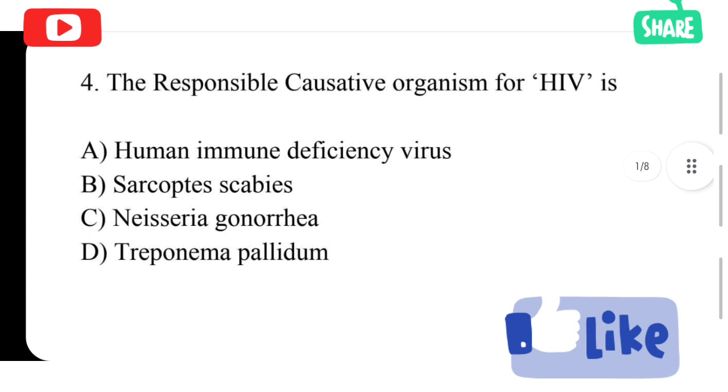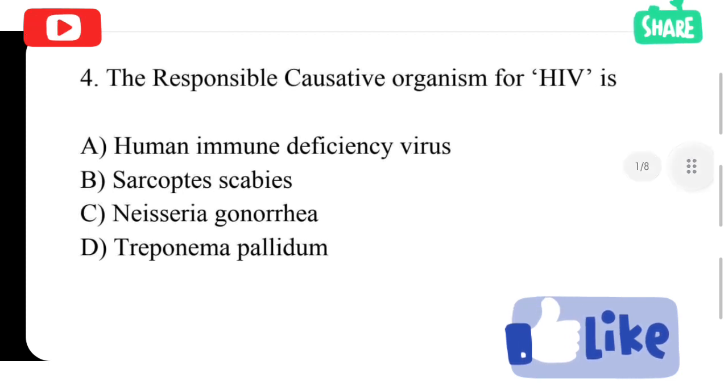The responsible causative organism for HIV is option A human immunodeficiency virus, option B sarcoptes scabies, option C neisseria gonorrhea, option D treponema pallidum. Option A is correct answer, human immunodeficiency virus.